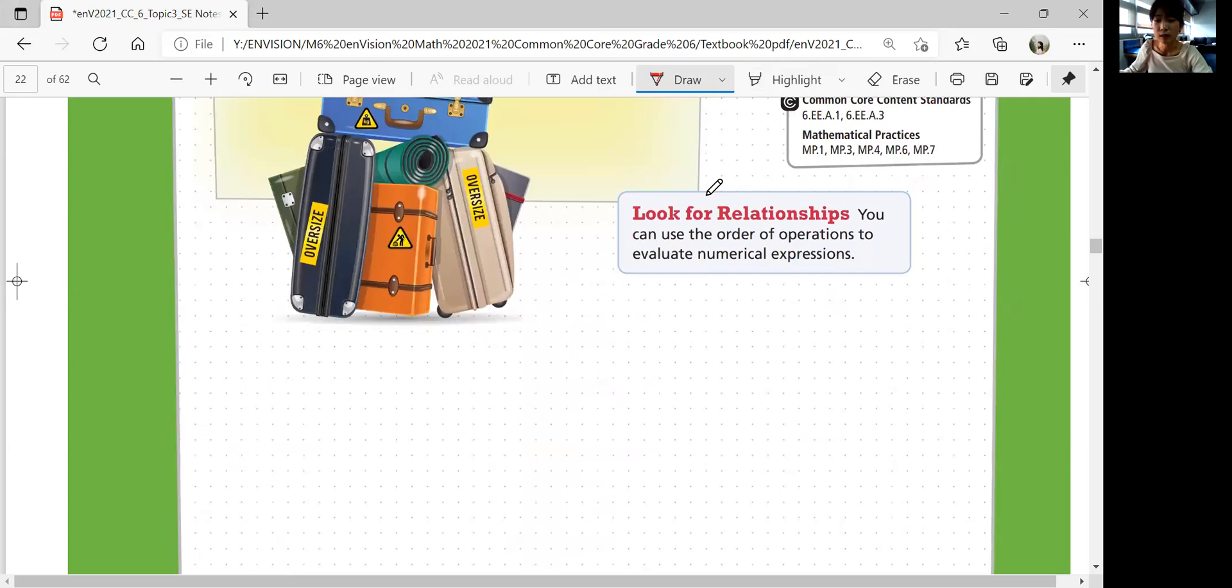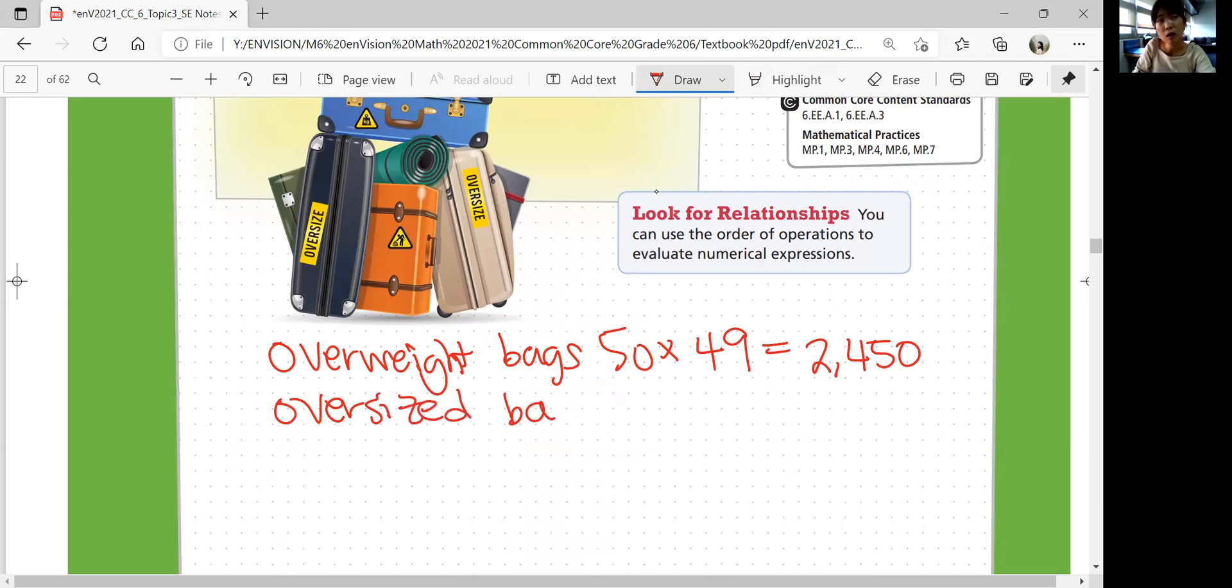Let's record that. For overweight bags, you have 50, the number of bags, times the cost for one bag, equals to total of $2,450. And oversized bags cost total of six bags times $75 each, $450.